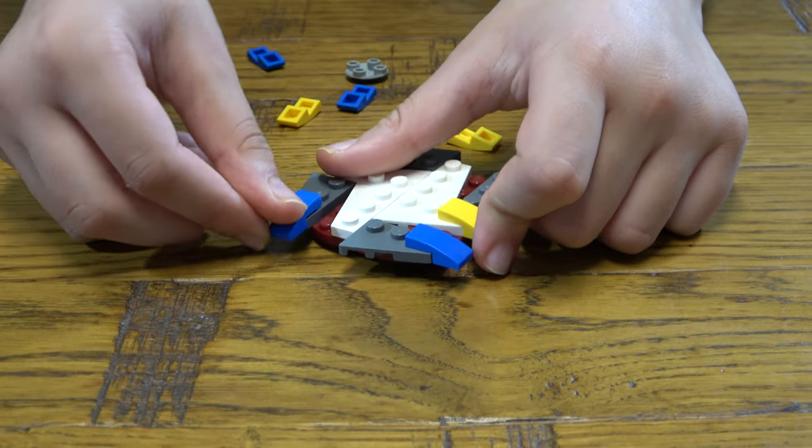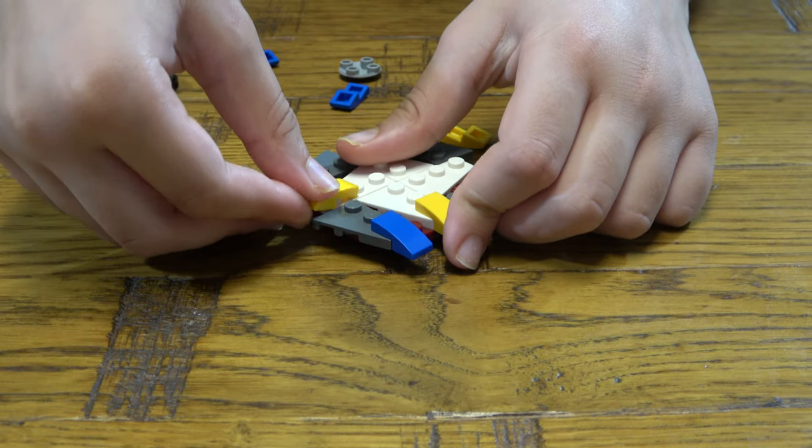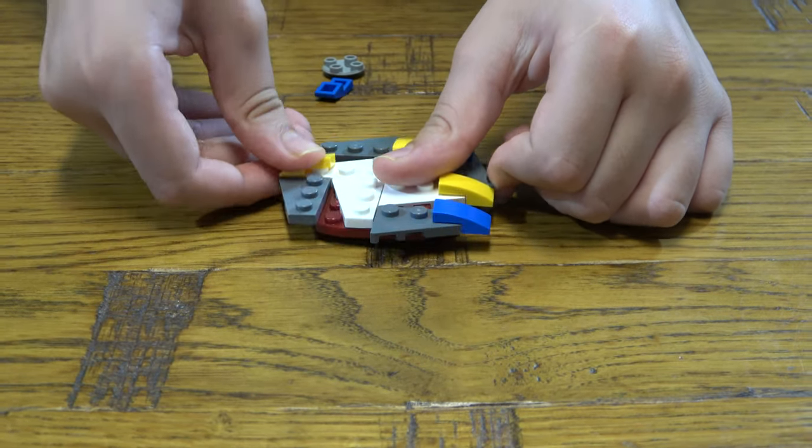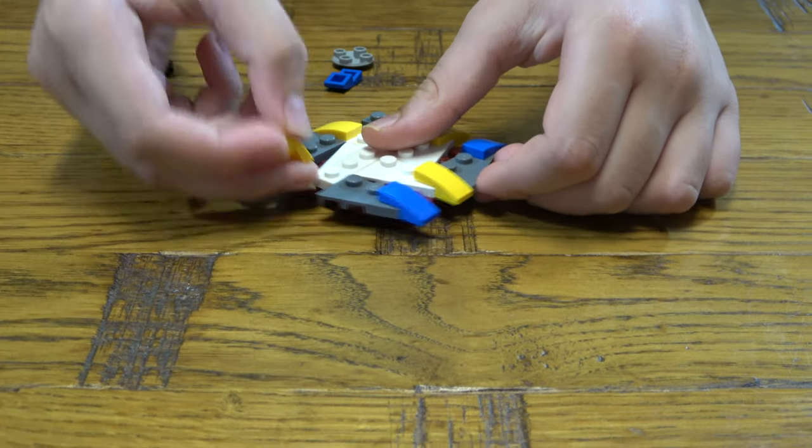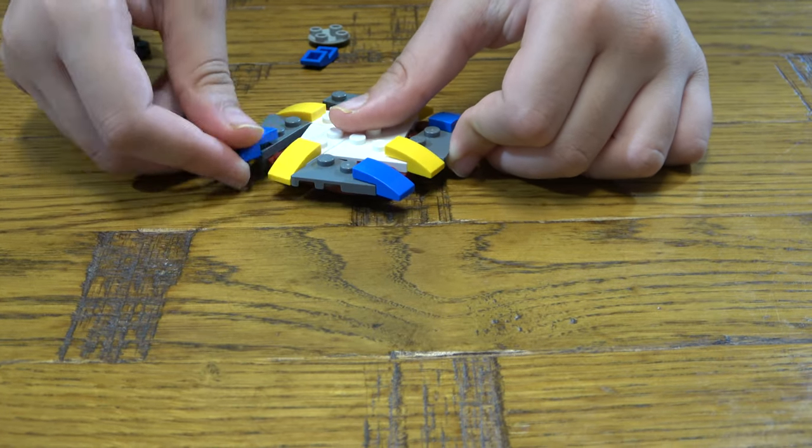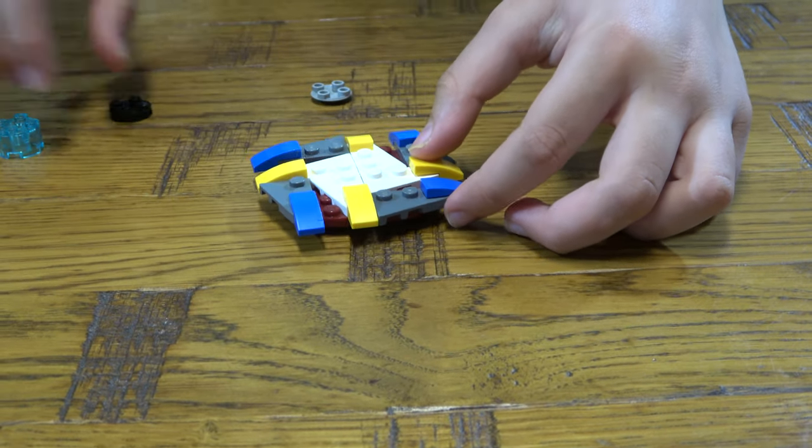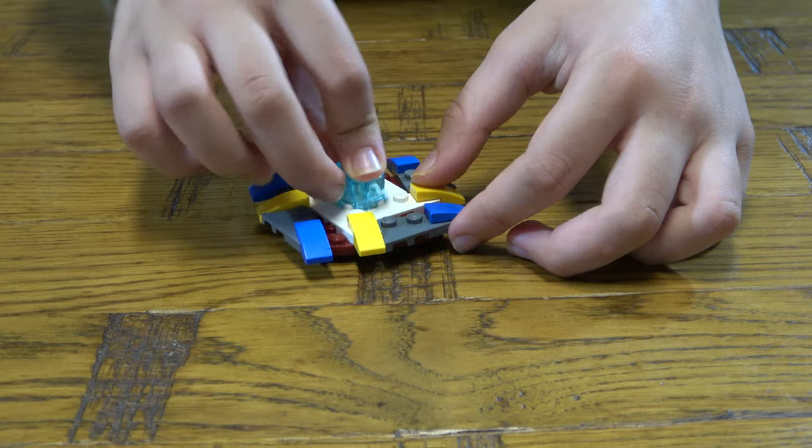Then place the blue ones on the greys and the yellow ones on the white. I just missed out the yellow one and a blue one and another blue one. Then we place this onto here.